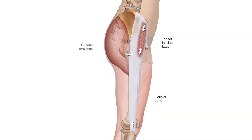We have a right lateral view of the pelvis and upper thigh and we are looking at the tensor fasciae latae muscle, the TFL. For context, the gluteus maximus has been ghosted in with less density so that we can see through it.